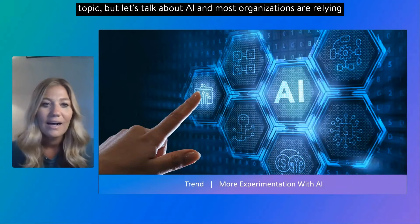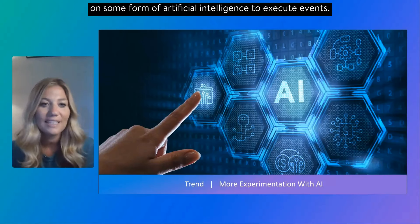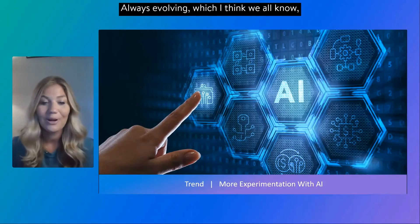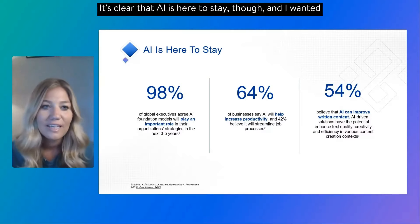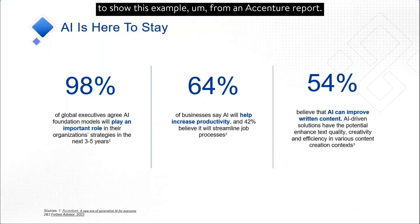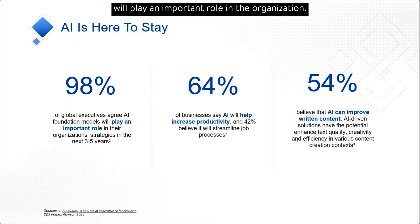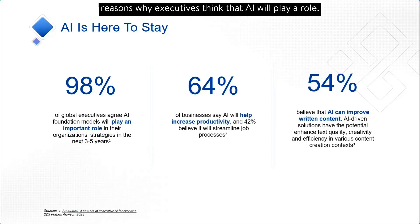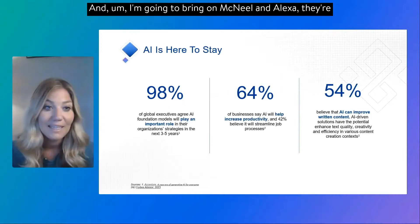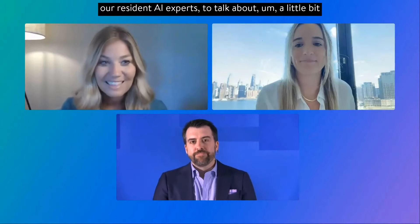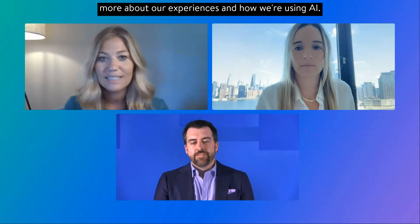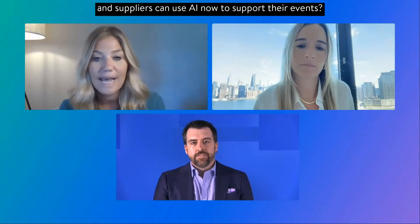Let's talk about AI. Most organizations are relying on some form of artificial intelligence to execute events, and this is always evolving. From an Accenture report, 98% of global executives agree that AI will play an important role in the organization in the next three to five years. Productivity and streamlining job processes are the top reasons, and 54% also believe AI can improve written content. McNeil and Alexa are our resident AI experts. McNeil, what are the tangible ways that planners and suppliers can use AI now to support their events?